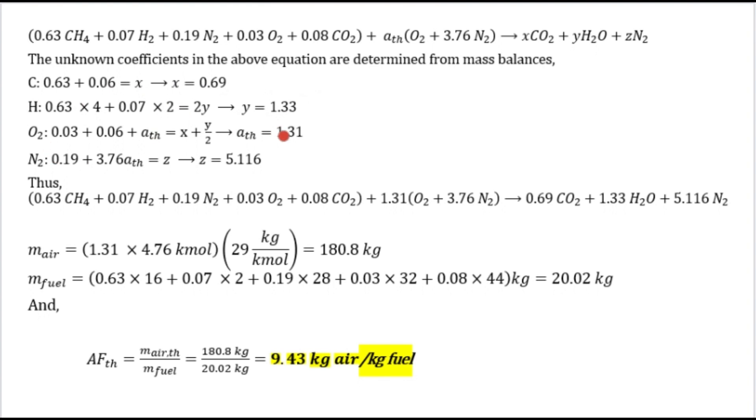For oxygen: 0.03 plus 0.06 plus a_th equals 1.31. For nitrogen: 0.19 plus 3.76a_th equals z, so z equals 5.116. Thus we need to find m_air.